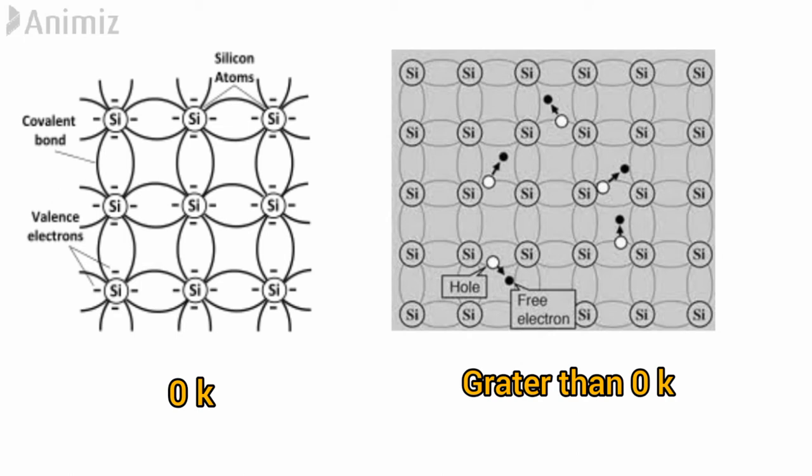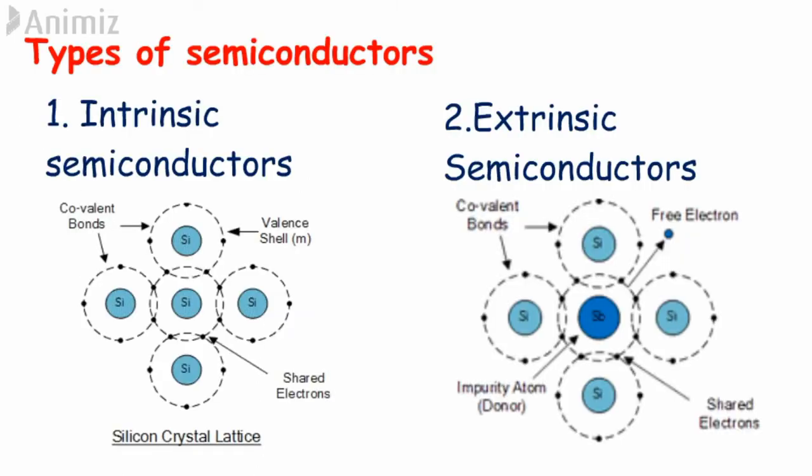Now let's move on to the extrinsic semiconductors. So let's see first how it differs from intrinsic. We know that intrinsic is a pure form of semiconductor. Then if we add impurities to the intrinsic, it is known as extrinsic semiconductors.